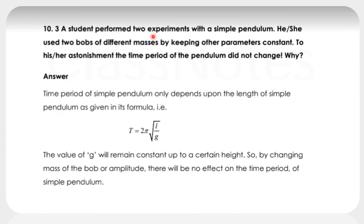The third question is, a student performed two experiments with a simple pendulum. He or she used two bobs of different masses by keeping other parameters constant. To his or her astonishment, the time period of pendulum did not change. Why?